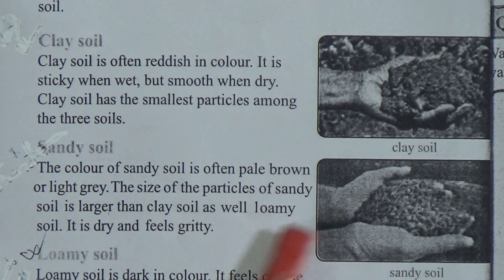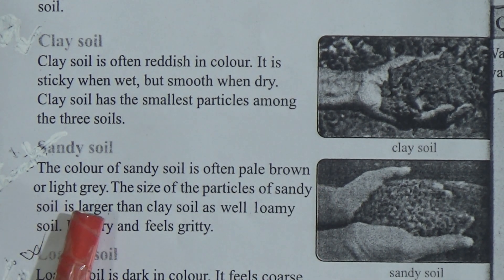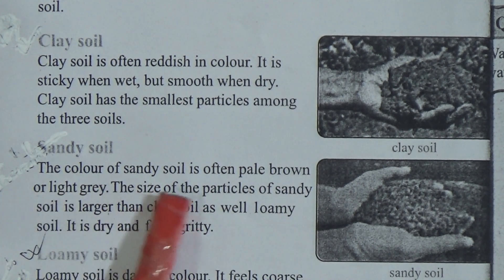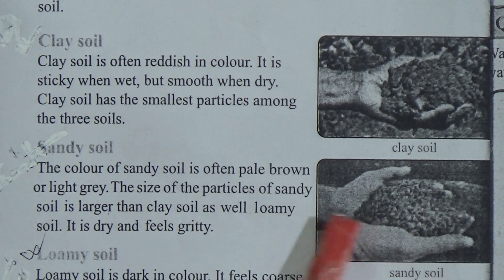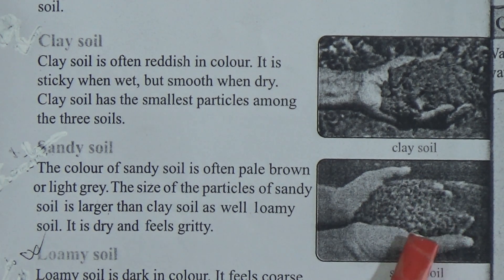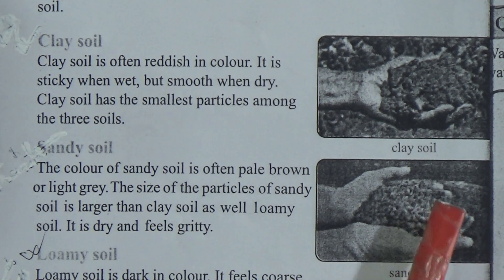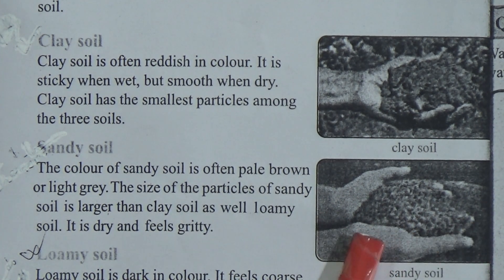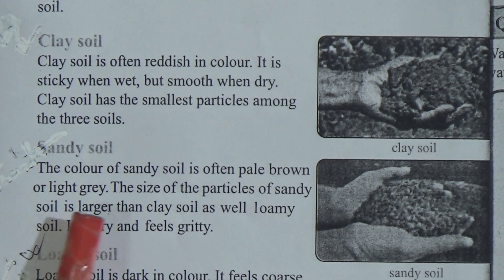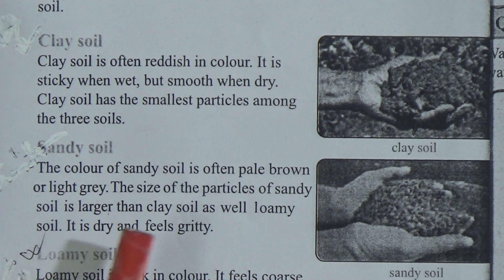Now, sandy soil. The color of sandy soil is often pale brown or light gray — underline this line. See this figure of sandy soil. The size of the particles of sandy soil is larger than clay soil as well as loamy soil. Sandy soil is dry and feels gritty.